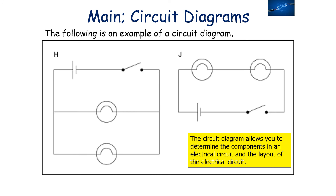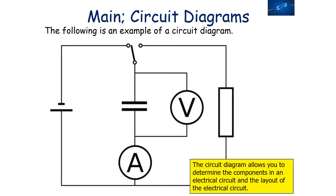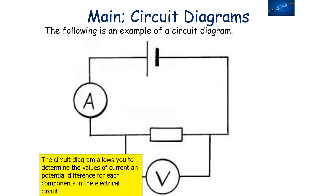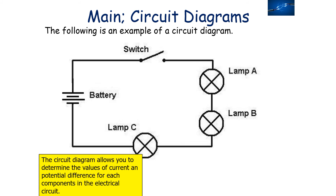A circuit diagram shows how the components in a circuit are connected together. Looking at examples of circuit diagrams, they allow you to determine what components are in the circuit and their layout. A circuit diagram will also allow you to determine the values of current and potential difference for each component in an electrical circuit.